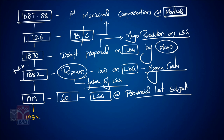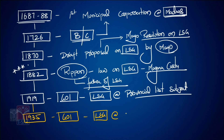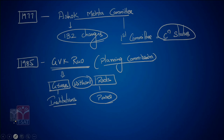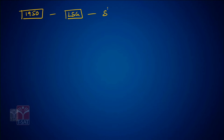The Government of India Act 1935 also made local self-governance part of the provincial list subject. After 1935, in 1950, local self-governance became part of the state list subject under the constitution.